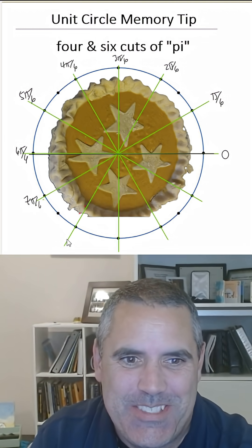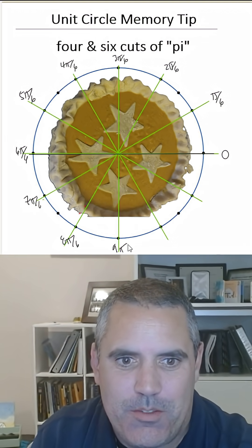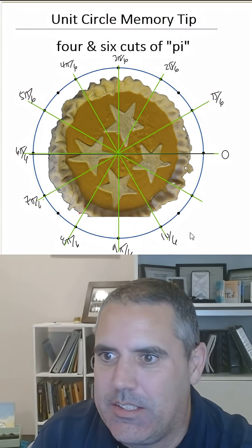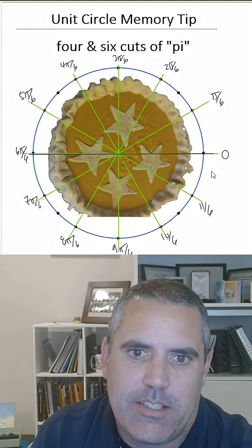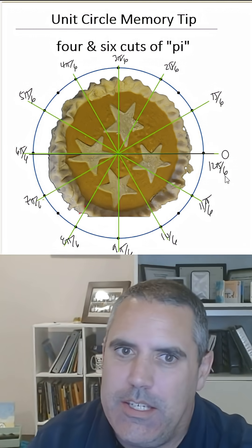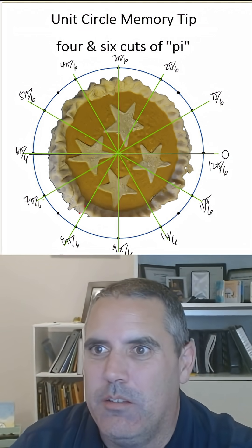7π/6, 8π/6, 9π/6, 10π/6, 11π/6, and 12π/6. That's it. That's all you need to label the angles of the unit circle.